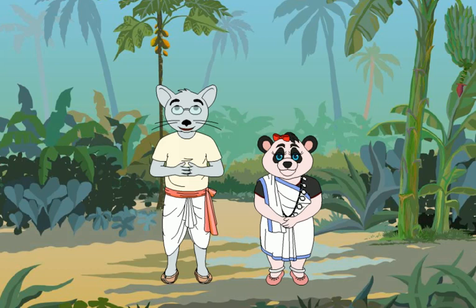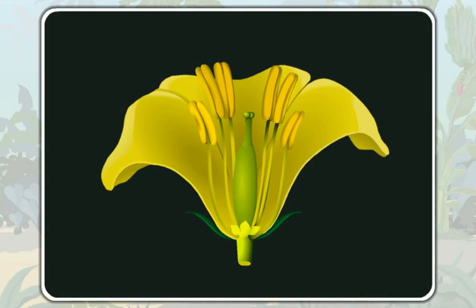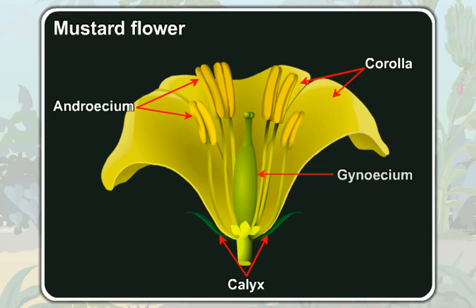Students, now you all know that a flowering plant bears flowers. Now, have a look at this mustard flower. It has four whorls in it. The first one is calyx, the second one is corolla, the third one is androecium, and the fourth one is gynoecium.